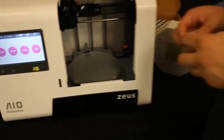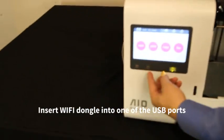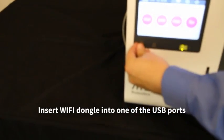As a next step, we will take the Wi-Fi dongle and place it in one of these USB ports. Now, let's take our first print with the Zeus machine.